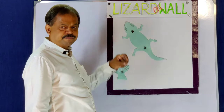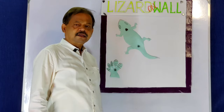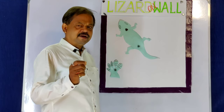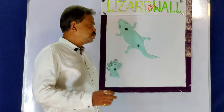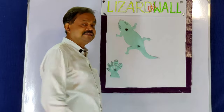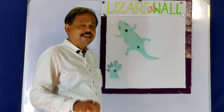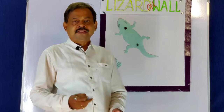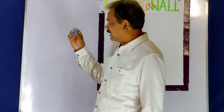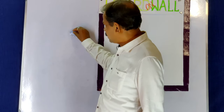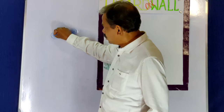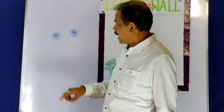Earlier, it was thought that every finger and toe of a lizard has a vacuum-like structure, and by this vacuum they get stuck on the wall — like this they stick to the wall and move from one place to another.